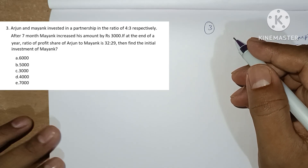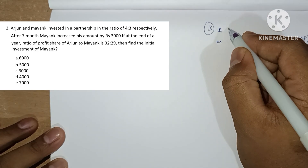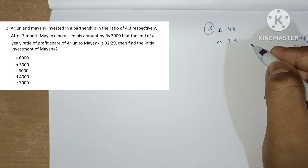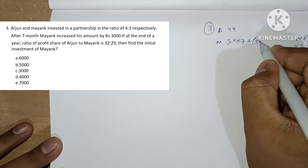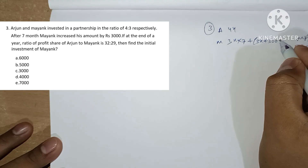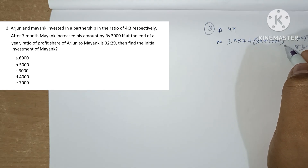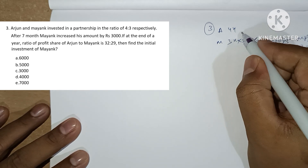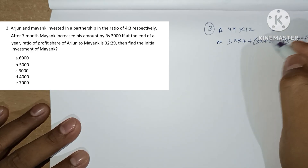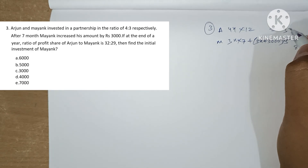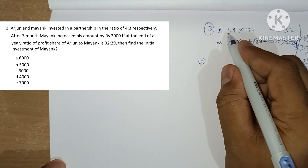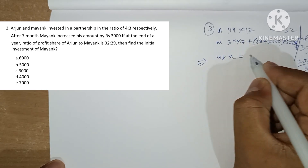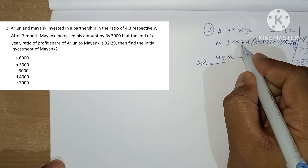Third question: Arjun and Mayank invested in the ratio of 4 is to 3. After 7 months, Mayank increased his amount by an extra 3000. At the end of the year, the profit share of Arjun to Mayank is 32 is to 29. Arjun's investment runs for 12 months giving 48x, and Mayank's split gives 21x for 7 months plus additional investment for 5 months.